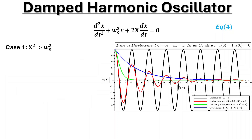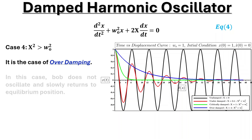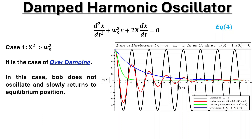Case 4: when γ² is greater than ω₀². This is the case of over-damping. In this case, the bob does not oscillate and slowly returns to the equilibrium position. All these results are subject to initial conditions. In case of non-zero velocity, overshooting can be observed.